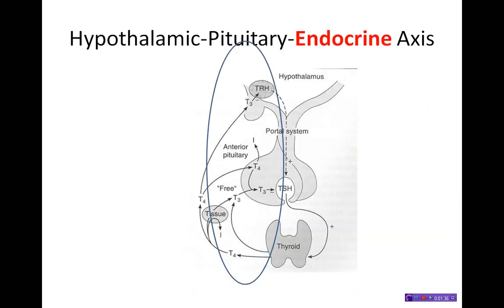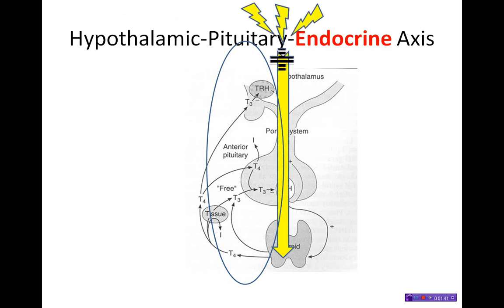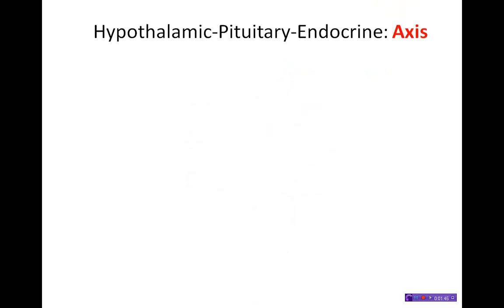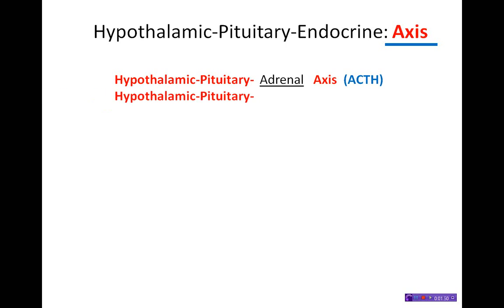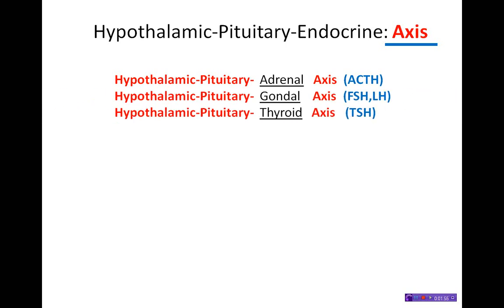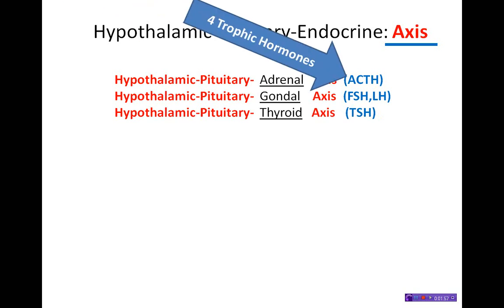It's a never-ending battle. The hypothalamic pituitary endocrine axis is what I just described. Notice that sometimes the HP axis is denoted by a specific endocrine gland, and there are four trophic hormones — meaning four out of the six anterior pituitary hormones have specific endocrine glands that they seek out. Prolactin and growth hormone are more generalized in their effects.